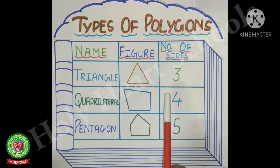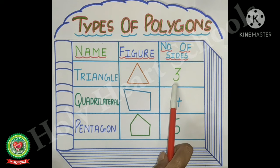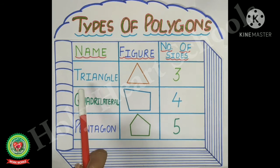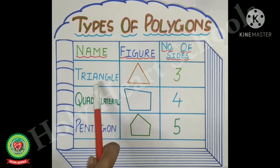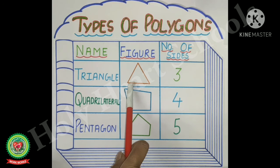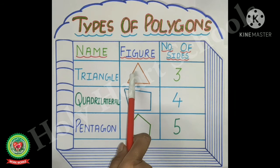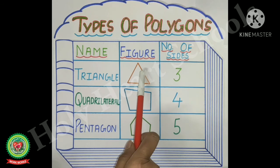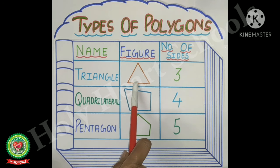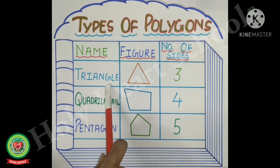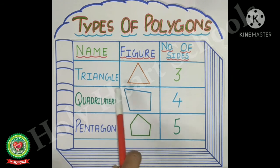The polygon which has three sides is called a triangle. This is a triangle — it has one, two, three sides. So this polygon is called a triangle.